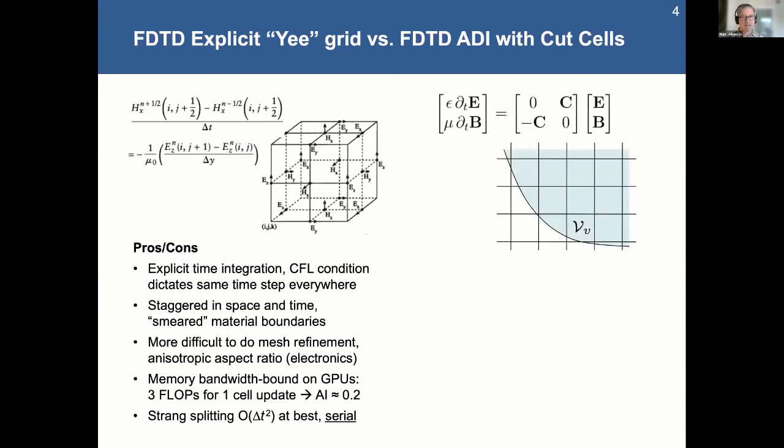So what I've been working on is a different version of this. It's called cut cells, and cut cells represent the domain in a way that you cut out these sharp material boundaries through the domain. I treat Maxwell's equations strictly as a curl-curl system, basically. And this is then treated with an alternating direction implicit approach, ADI. So what's nice about that is that even with the anisotropy, it is an unconditionally stable method.